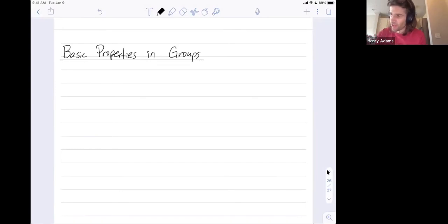Our first property will be Proposition 3.17 in our book, which says in any group G, the identity element is unique.